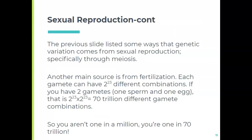Because we reproduce sexually, you've got all the variations that can happen in one egg and all the variations in one sperm, and combining those two together. If you crunch the numbers, you can have 2 to the 23rd different combinations in a sperm and 2 to the 23rd in an egg — that's 70 trillion different gamete combinations, leading to lots of diversity in a population, because even siblings will have a very different combination.